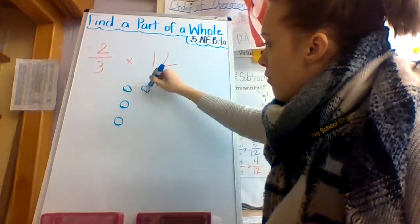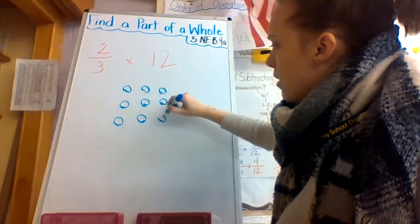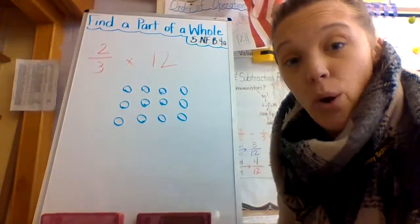One, two, three, four, five, six, seven, eight, nine, ten, eleven, twelve. I'm going to stop there because 12 is my whole number.